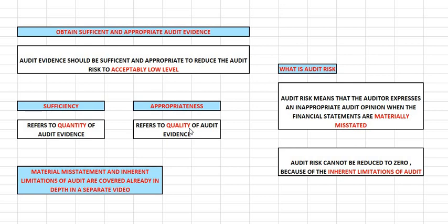Because of that inherent limitation, you cannot say that audit risk will be zero. Audit risk cannot be reduced to zero. That's why we say 'acceptably low level' — the lowest possible level — but it cannot be zero. So audit evidence should be sufficient and appropriate to reduce the audit risk to an acceptably low level.